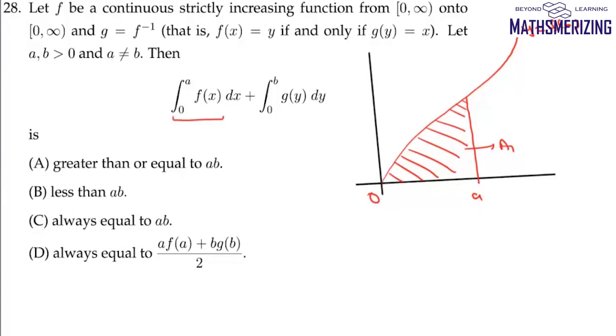Now we'll draw a line at y = b. If we draw a line at y = b, then this integral from 0 to b of g(y)dy will correspond to this area. That's a₂.